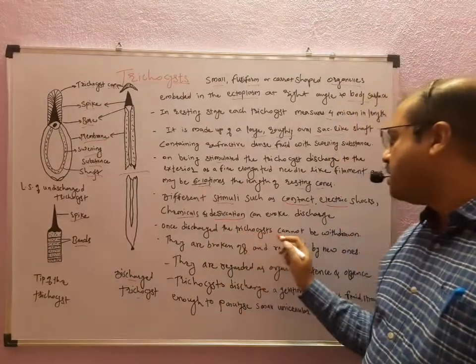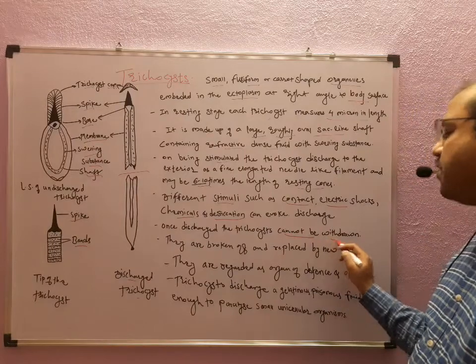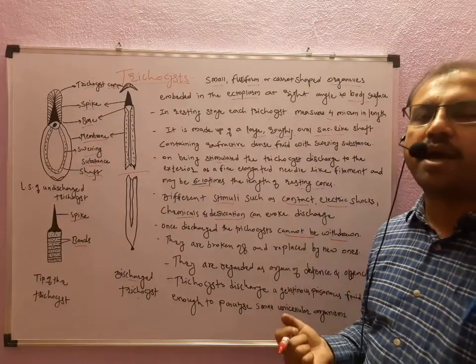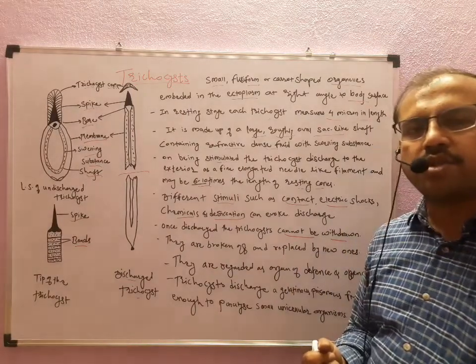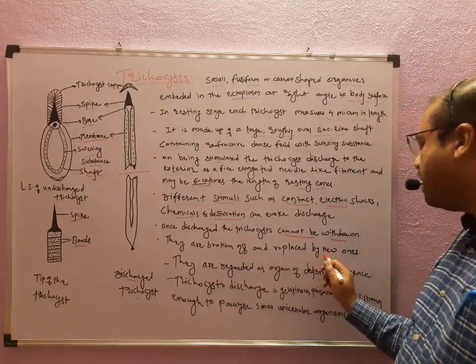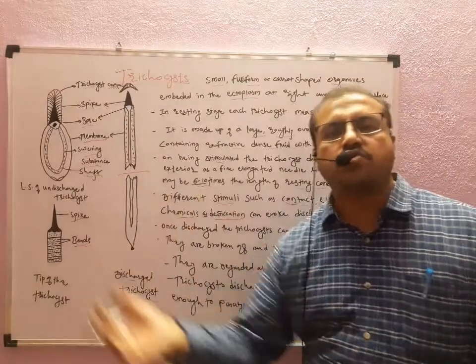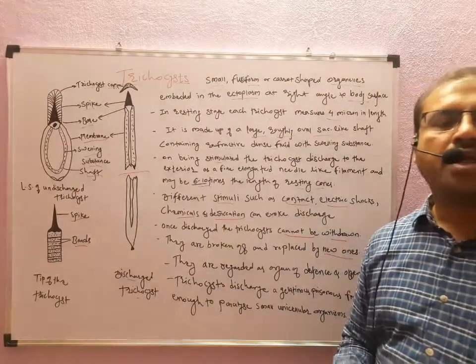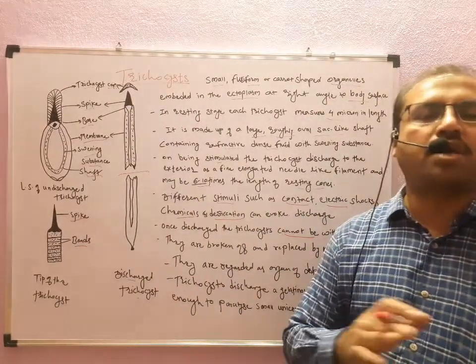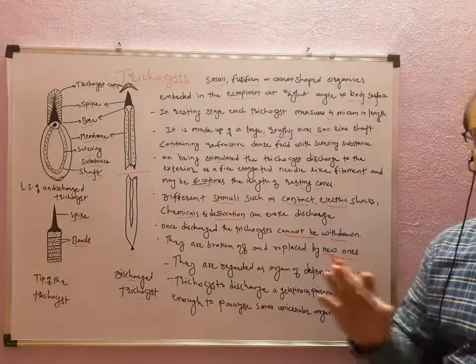Due to this, the trichocyst can be discharged out or thrown by the paramecium. Once this trichocyst gets discharged, it cannot be withdrawn or taken back into the cell by the paramecium. They are broken off and replaced by new ones.